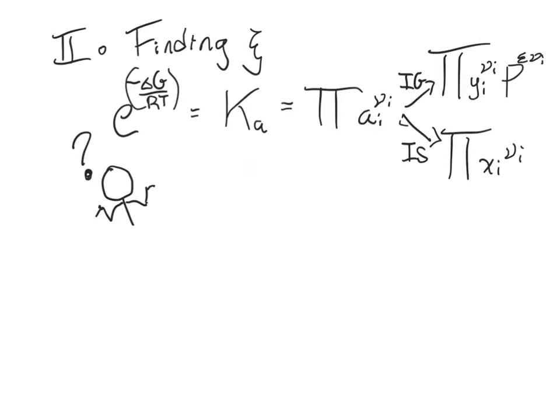All right, let's recap where we are. At chemical reaction equilibrium, this is what has to be true: that Ka, which equals e to the negative ΔG over RT, has got to be in balance with the multiplied chemical activities each raised to their stoichiometric coefficients.